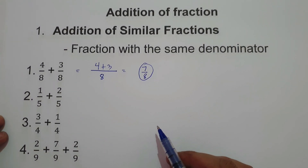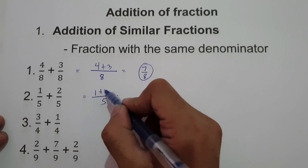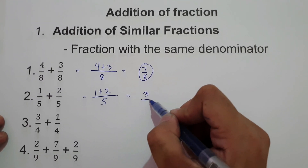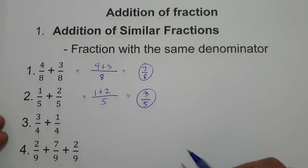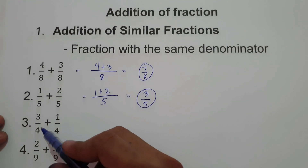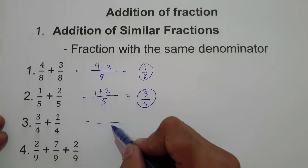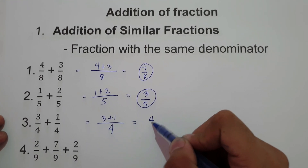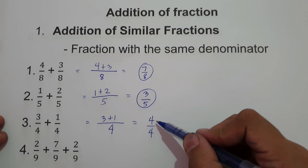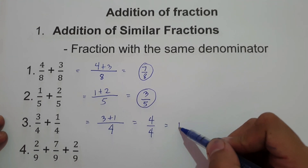Number 2: we have 1 over 5 plus 2 over 5. So we have 5 as denominator and then 1 plus 2, that is 3 over 5. So the answer is 3 over 5. Number 3: 3 over 4 plus 1 fourth, so we have denominator as 4. 3 plus 1, that is 4 over 4. Since 4 over 4 can be simplified, we divide 4 by 4, that is simply 1.